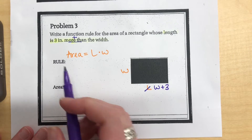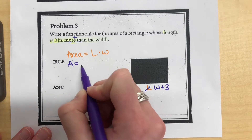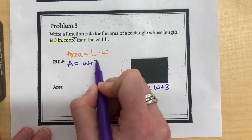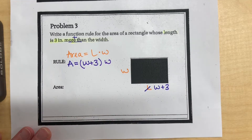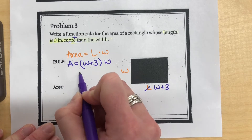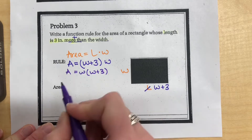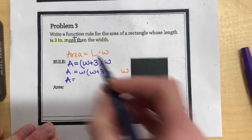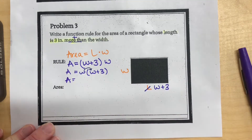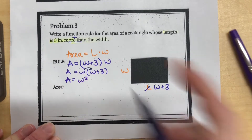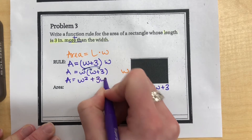When writing my rule: A equals my length, which is replaced with W plus 3, times my width. I can use the distributive property here. W times W is W squared, and W times 3 is 3W. So my function rule is A equals W squared plus 3W.